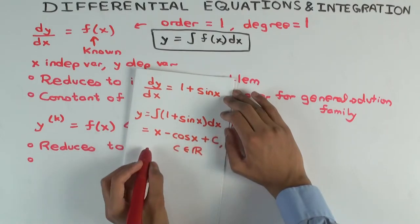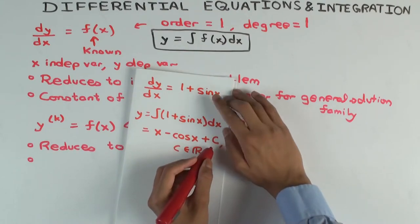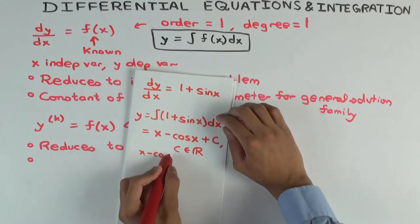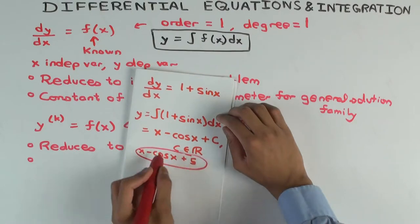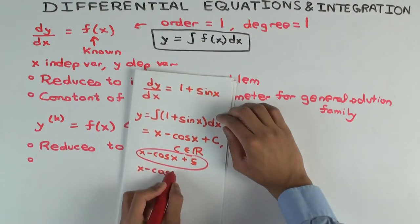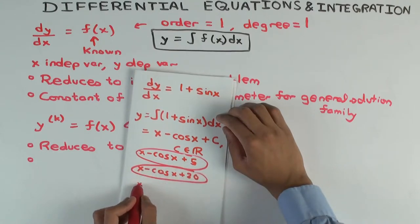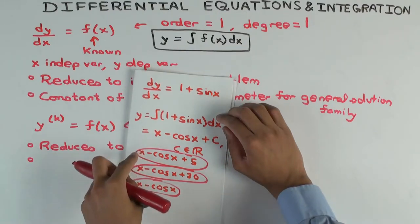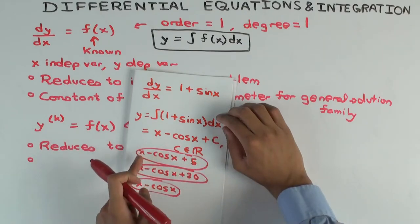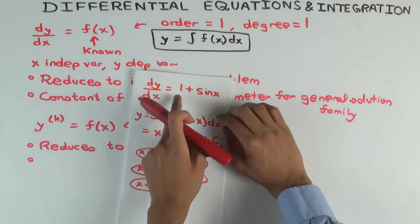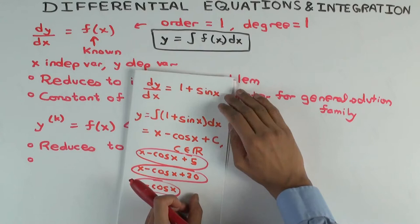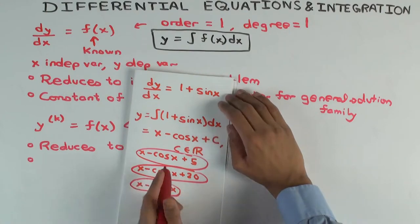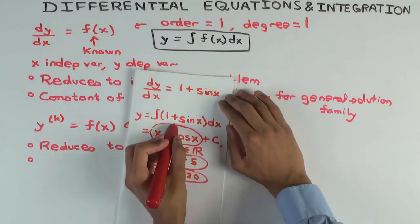This means that for every fixed value of C, you get an antiderivative of this function. If C is 5, you get x − cos(x) + 5. If C is 20, you get x − cos(x) + 20. If C is 0, you get x − cos(x). There are infinitely many solutions — all of them satisfy the differential equation.